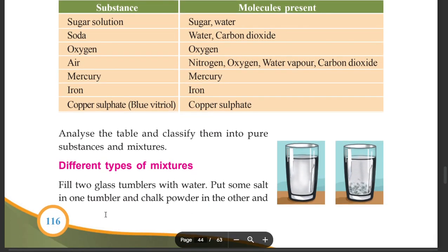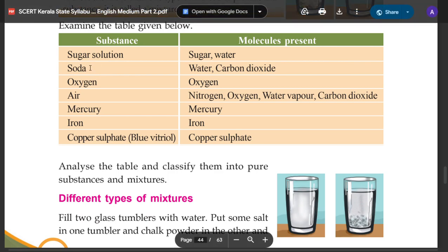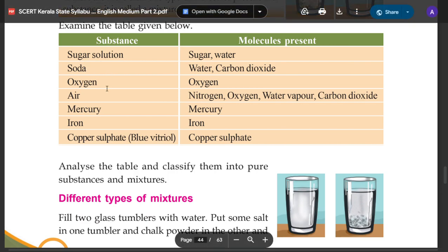The table is classified as pure substance and mixture. Pure substances include oxygen, mercury, iron, and copper sulfate. Mixtures include sugar solution, soda, and air.